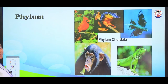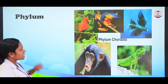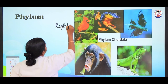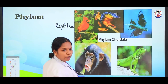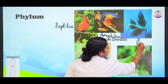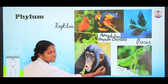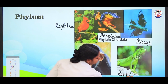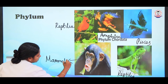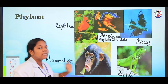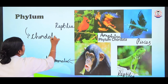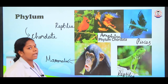Next we are going to see the phylum. Many classes join together to form a phylum. Here, this bird belongs to class Reptilia, this frog belongs to class Amphibia, fish belongs to class Pisces, reptiles belong to class Reptilia, and monkeys belong to class Mammalia. They belong to different classes but are placed under the same phylum — phylum Chordata. The organisms with a backbone are classified under phylum Chordata.